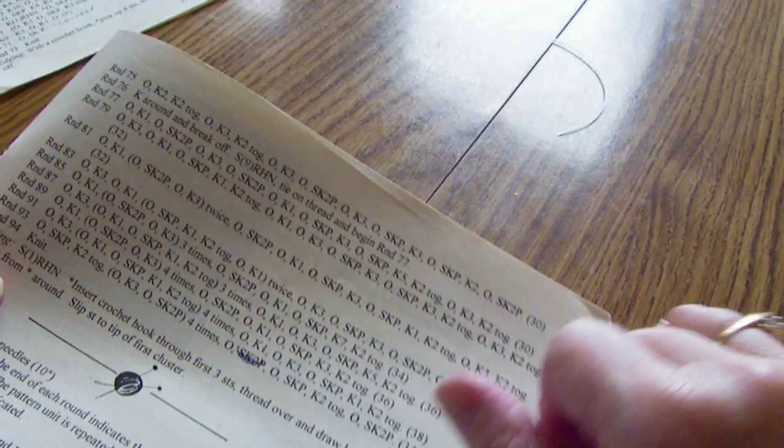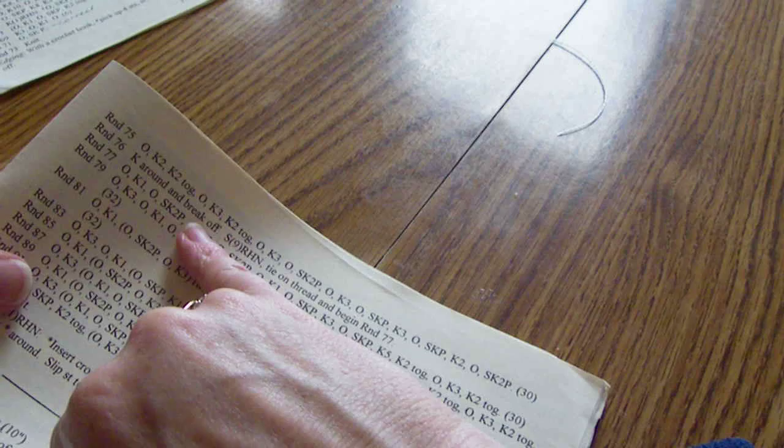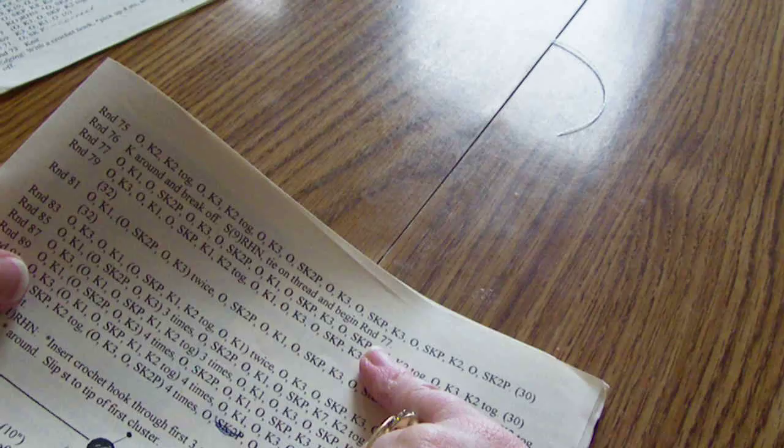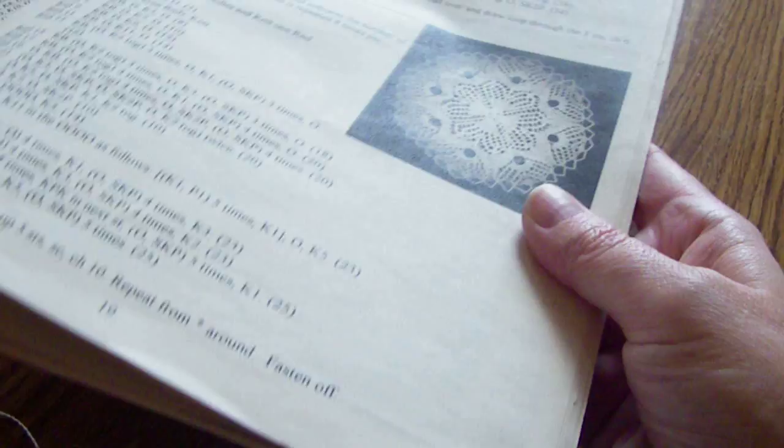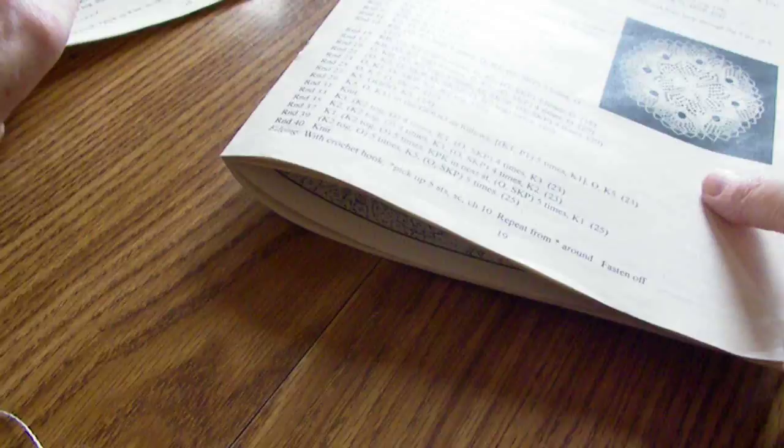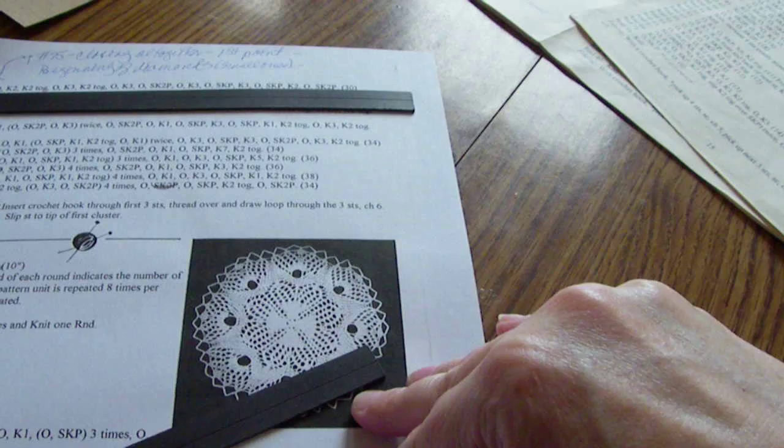That is okay. Now I'm on this round here where you knit around, you cut off your yarn, you slip nine, and then you tie a new thread on and begin round 77.